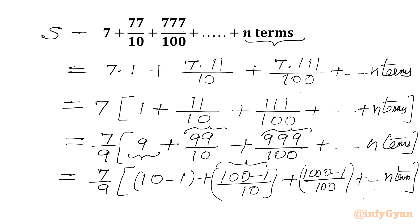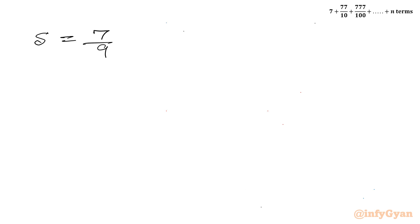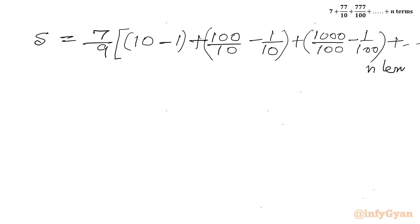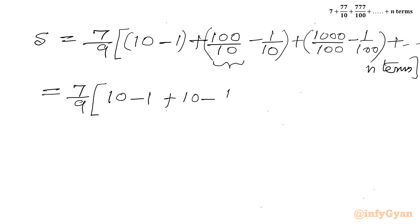Now I will split the numerators. So we can write S is equal to 7 over 9 in bracket: 10 minus 1 for the first term, then 100 over 10 minus 1 over 10 for the second term, and 1000 over 100 minus 1 over 100 for the third term, up to n terms.